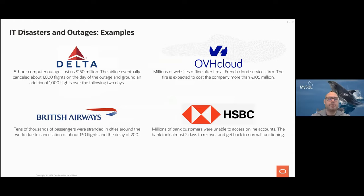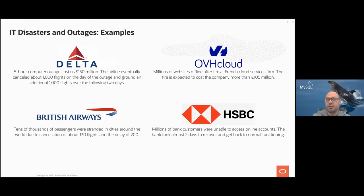Some real-world examples: Delta, OVH, AHBC, and British Airways. OVH Cloud had one of their data center's catch fire — I think it was 2019 or 2020 — which had a big impact on many customers. Delta Airlines had an outage that cost them $150 million; a lot of flights were cancelled and many people were impacted in the coming days. So it's very important to have protections in place.